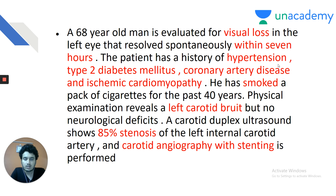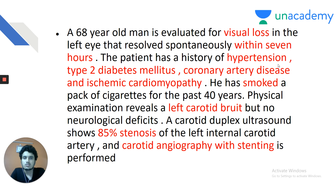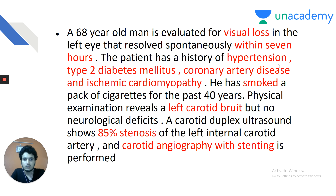What is the most common systemic artery involved by atherosclerosis? The answer is the carotid artery. But overall, the most common artery in the body involved by atherosclerosis is the coronary artery. Coronary artery atherosclerosis decreases blood supply to the heart, thereby producing angina and myocardial infarction. Smoking is a direct risk factor for atherosclerosis. Type 2 diabetes mellitus is also indirectly related. A carotid angiography with stenting is done to relieve the obstruction.